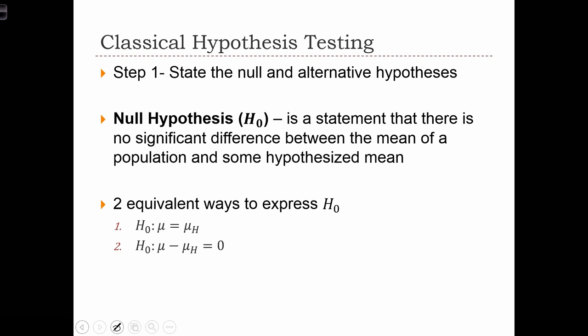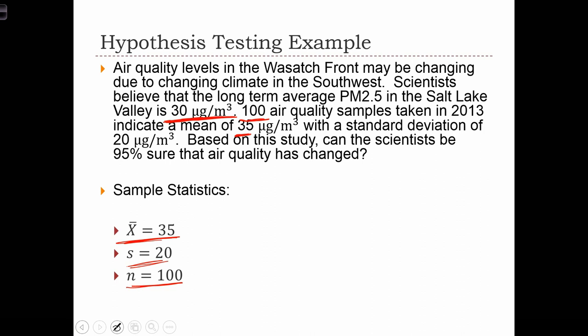Classical hypothesis testing is a six-stage, a six-step procedure. So I'm going to introduce you to the six steps. And as we do that, we'll apply the six steps to the question from the previous slide. And just to see that we have that in mind, the question is, can the scientists be 95% sure that air quality has changed?